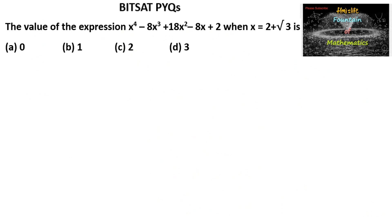We need to find the value of x power 4 minus 8x power 3 plus 18x square minus 8x plus 2, when x is equal to 2 plus root 3.